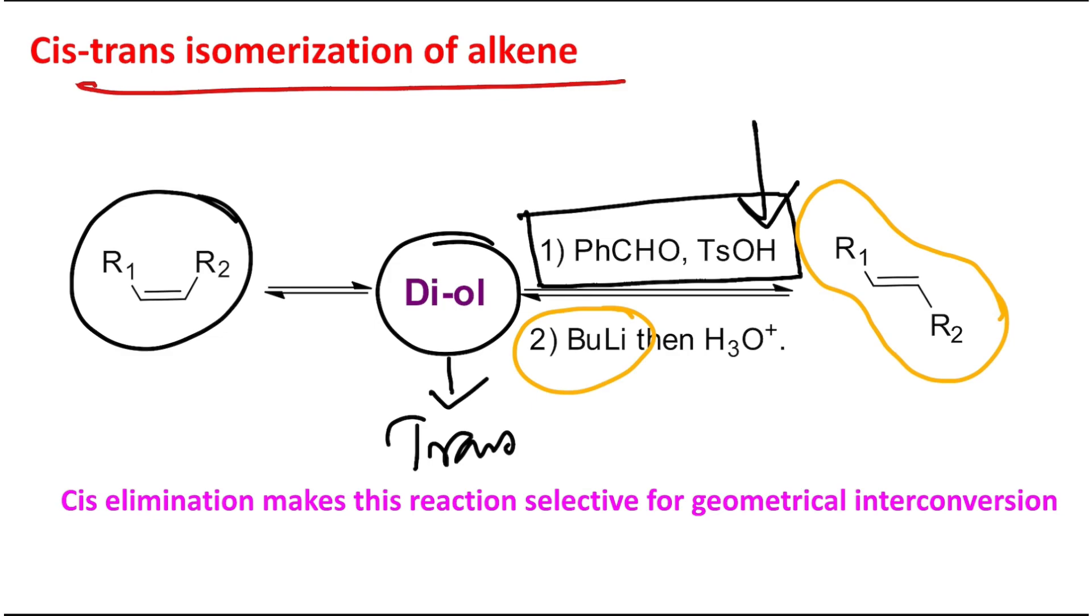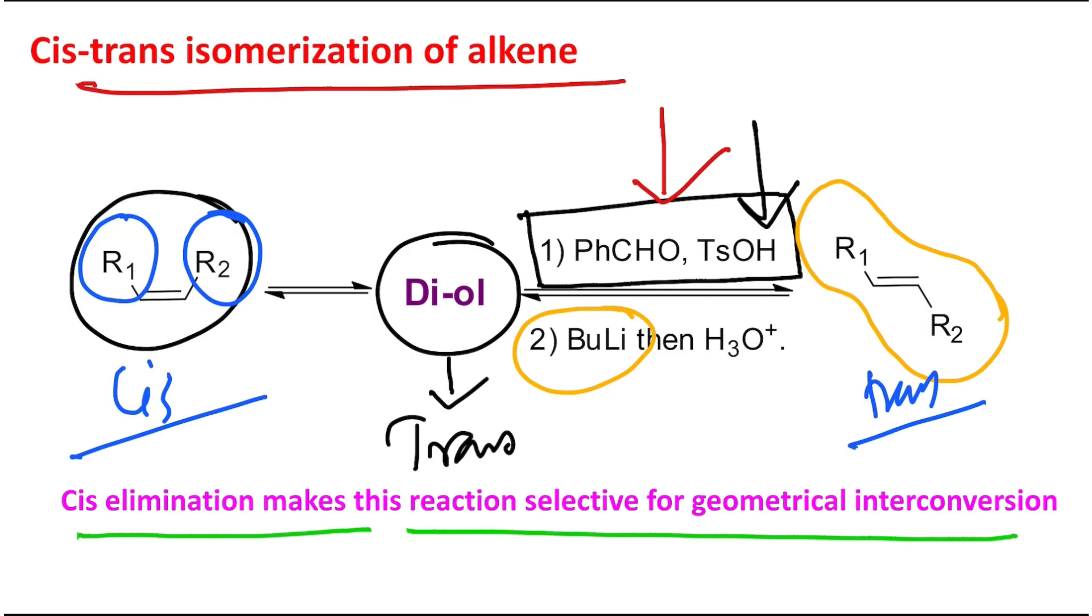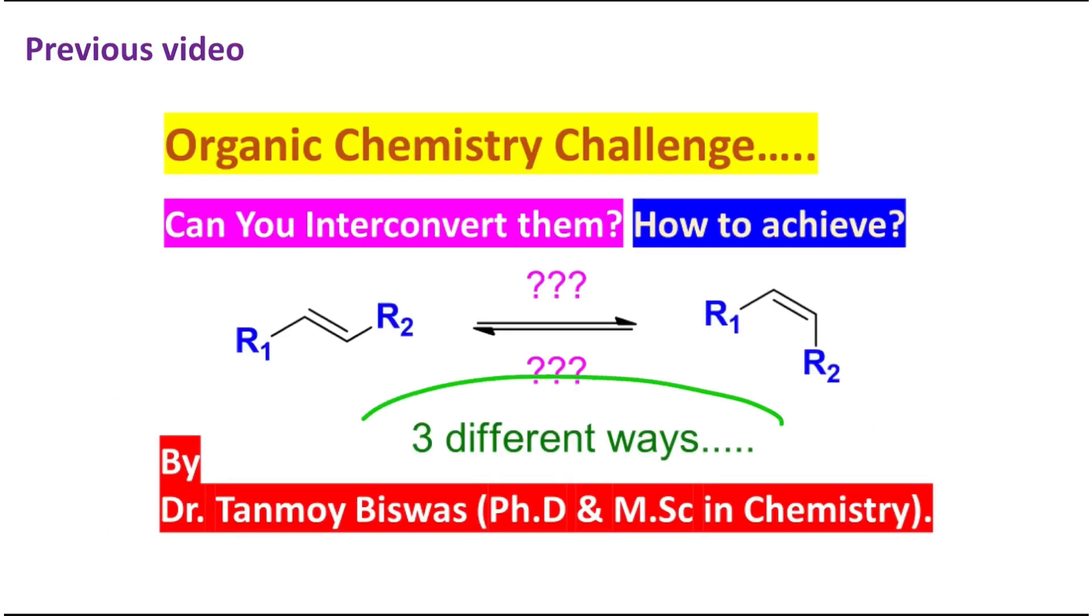Later, with butyl lithium as a base, it will produce this trans alkene. Why? Because this diol is trans. But for acetal formation, these two diols will come in cis orientation. Consequently, initially these two R₁ and R₂ which were in cis will change their orientation and come into trans orientation, which ultimately results in this trans alkene. So this is a method for cis alkene to trans alkene preparation. This cis elimination makes this reaction selective for geometrical interconversion.